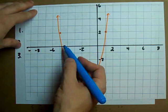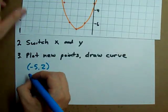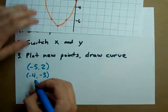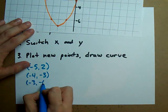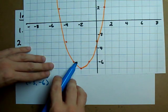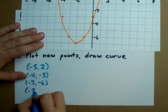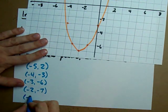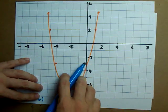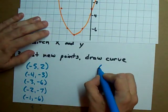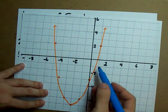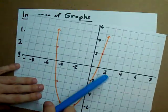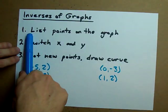I see another one here at (-4, -3). I see one at (-3, -6). I see one at (-2, -7). I see one at (-1, -6). I see one at (0, -3). And I see one at (1, -2). That's all the points that I see on this. So we've listed our points.